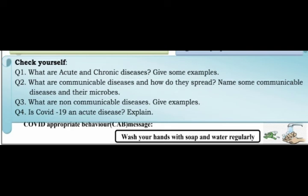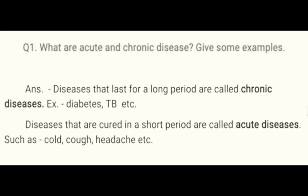Question 1: What are acute and chronic diseases? Diseases that last for a long period are called chronic diseases — for example, diabetes, TB, etc. Diseases that are cured in a short period are called acute diseases — such as cold, cough, headache, etc.